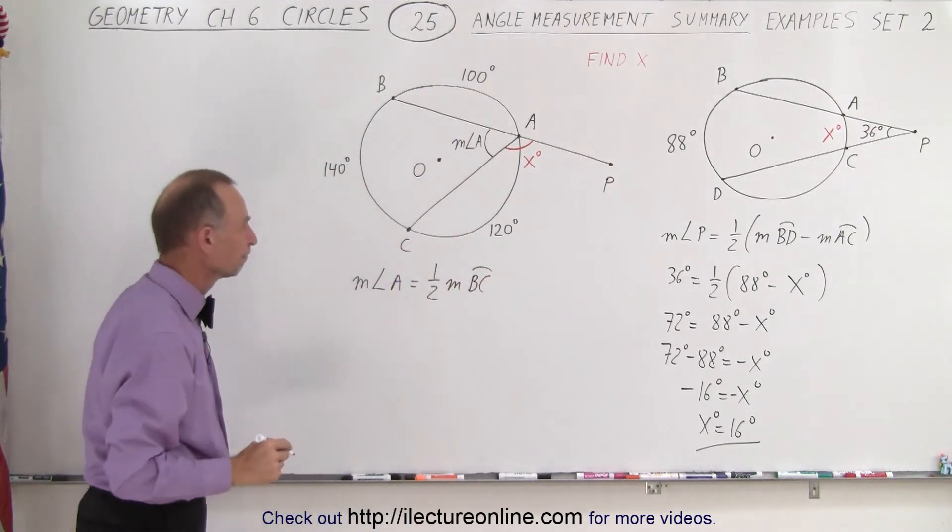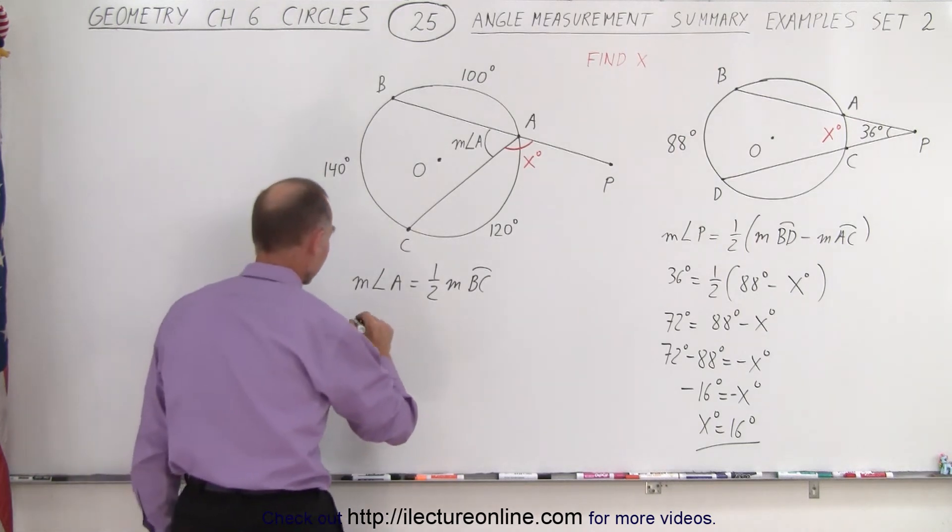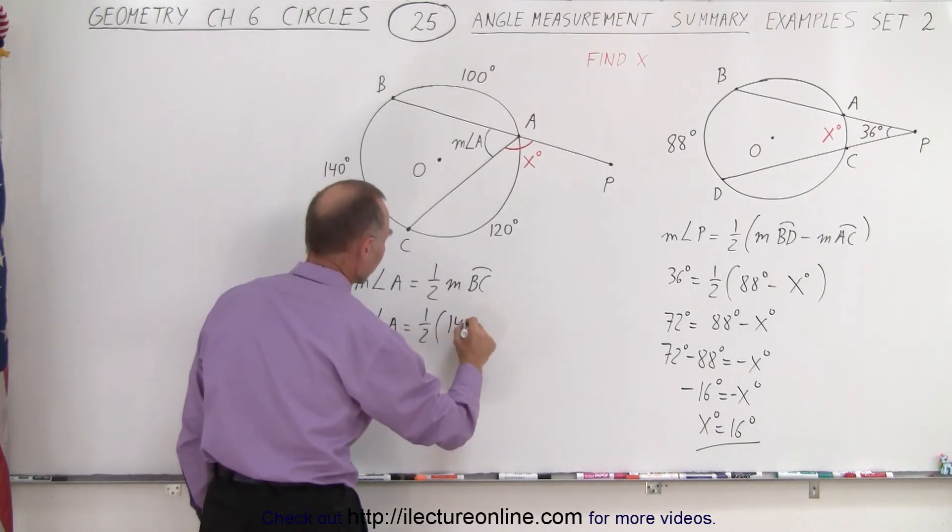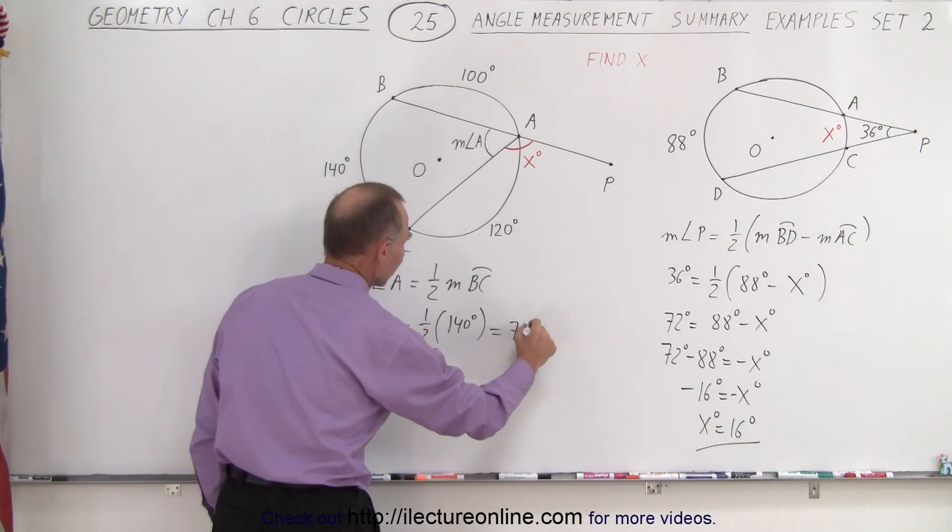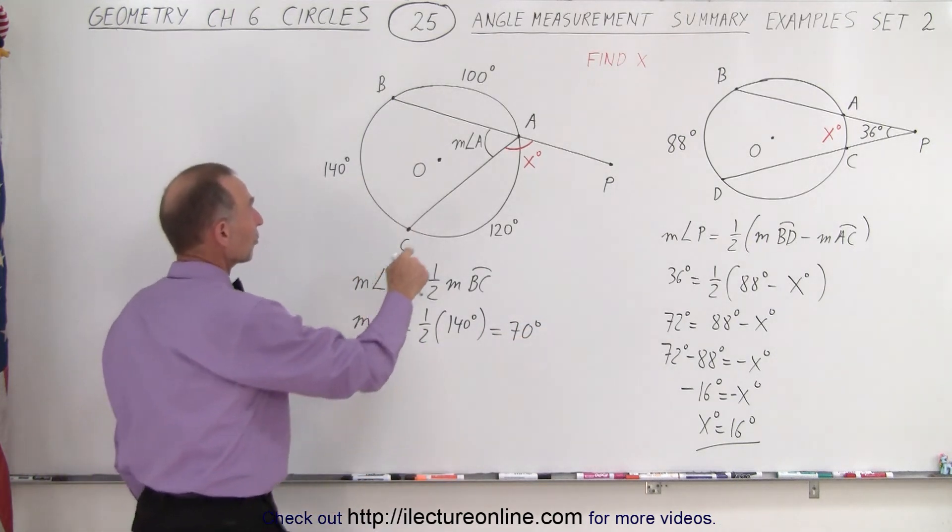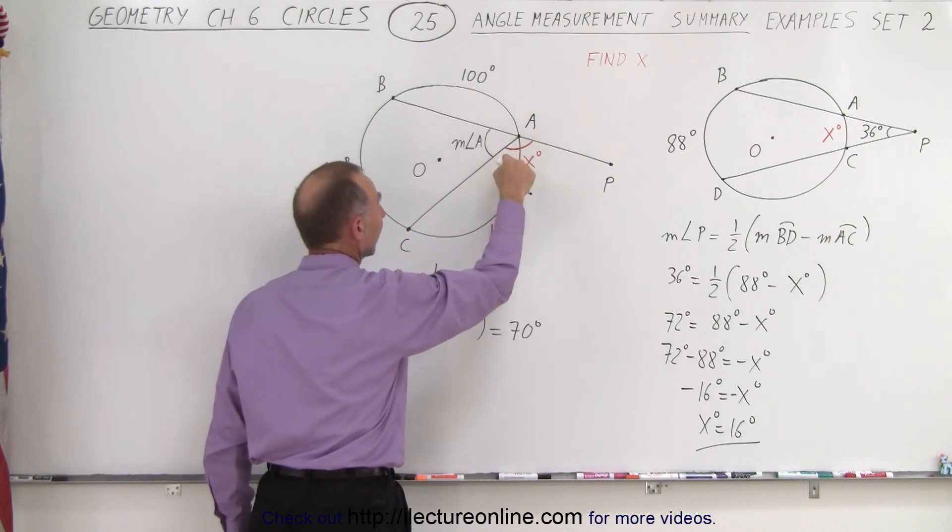And that happens to be given. So now we can say that therefore the measure of the angle A is equal to one-half times 140 degrees, which is equal to 70 degrees, but then of course we're not looking for the measure of the angle A. We're looking for x degrees.